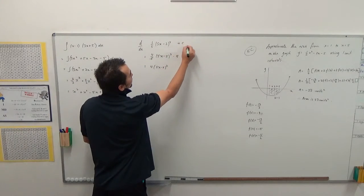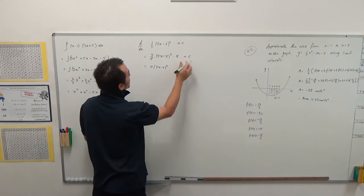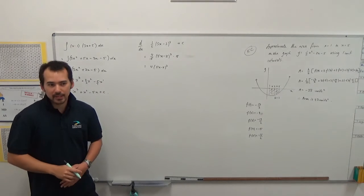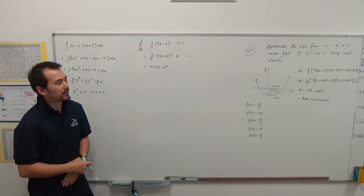Alright. If there was a constant here, it would cancel. We would lose that constant, because the derivative of constant becomes zero. Okay?